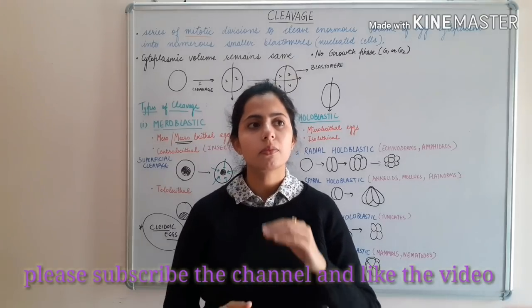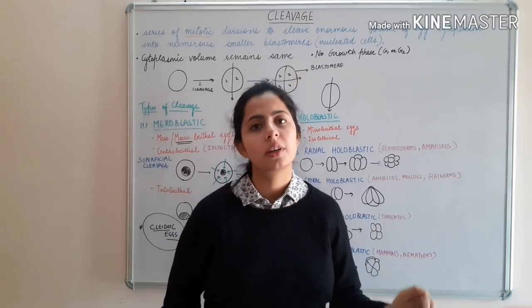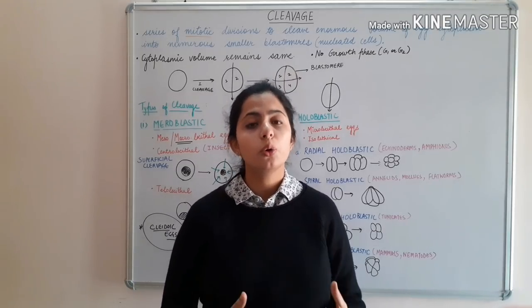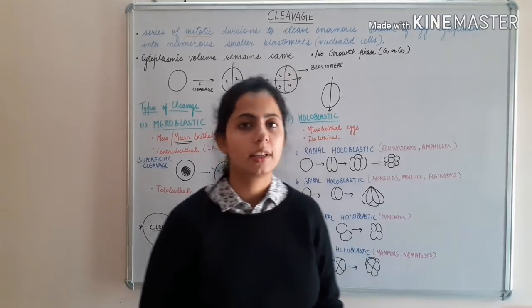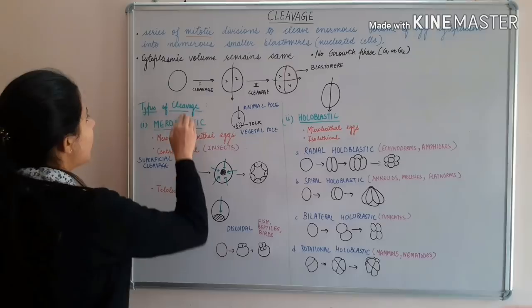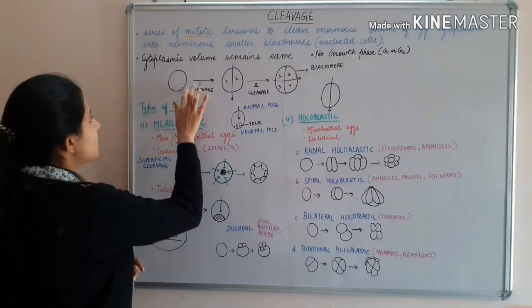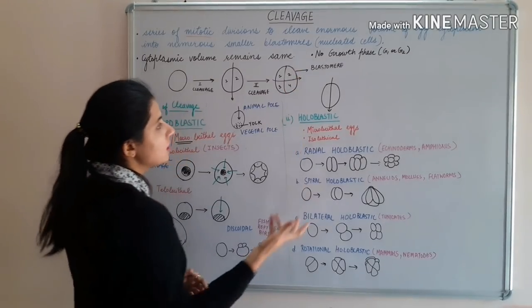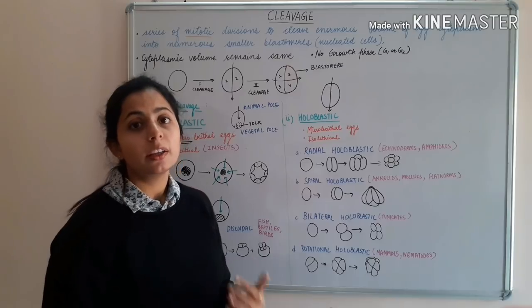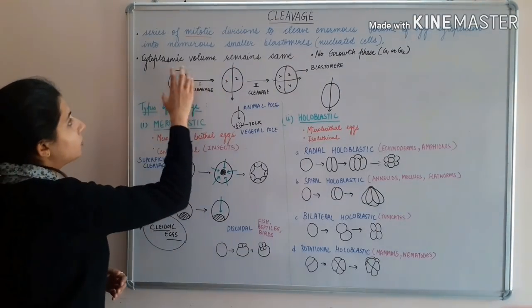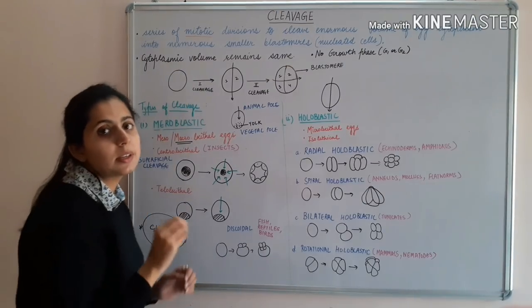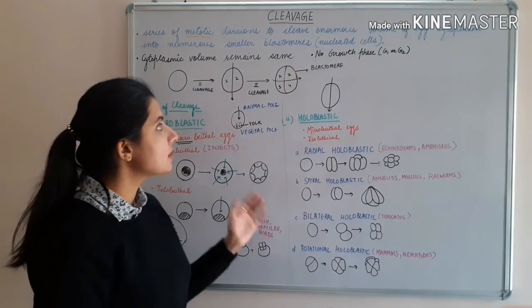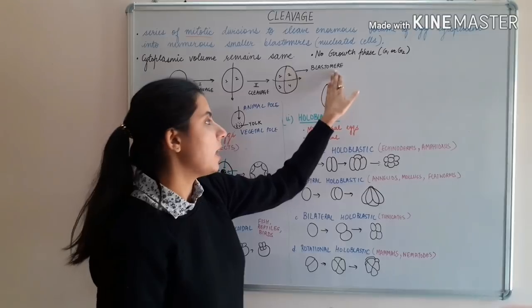In case of cleavage, the cell size keeps on decreasing whereas the cell number keeps on increasing, because no growth phase is present. As we can see, the cell size is much larger at the start compared to cell 4, 2, and so on. This is all because of cleavage. The cytoplasmic volume remains the same but the cell size decreases. The resultant cells of the cleavage are known as blastomeres.